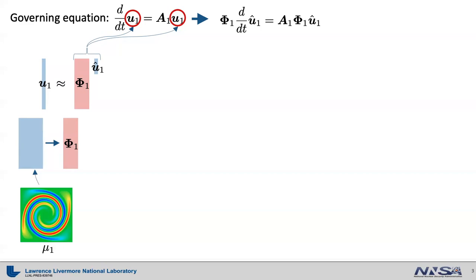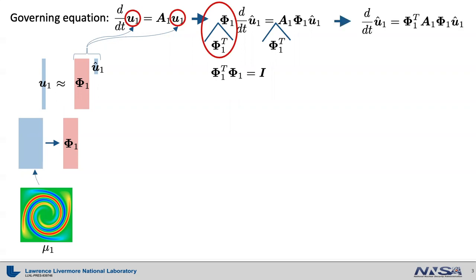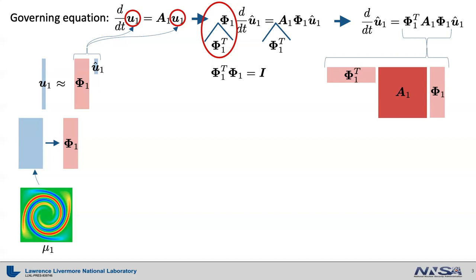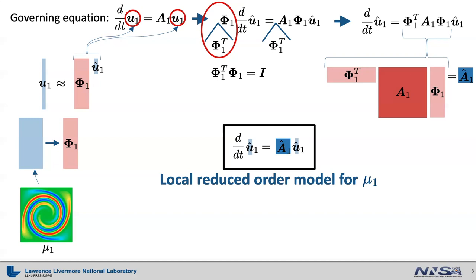This is an over-determined system, so we need to close it. One way is to multiply both sides by phi sub 1 transpose. Note that phi sub 1 transpose times phi sub 1 is the identity matrix due to orthogonality, so that term vanishes. We are left with: time derivative of u sub 1 hat equals phi sub 1 transpose times A sub 1 times phi sub 1 times u sub 1 hat. The dimension of phi sub 1 transpose times A sub 1 times phi sub 1 becomes a small square matrix A sub 1 hat, forming a local reduced order model for training point mu sub 1.